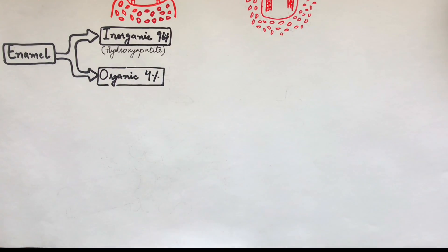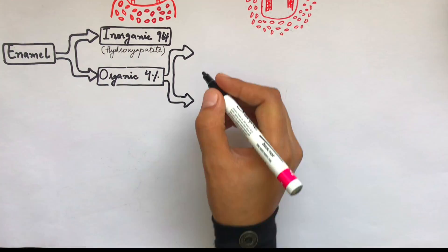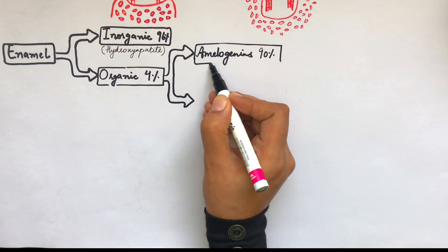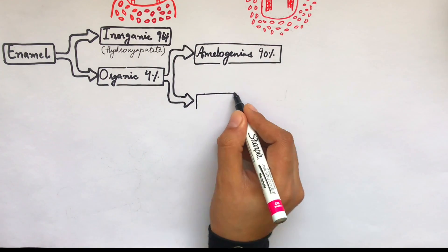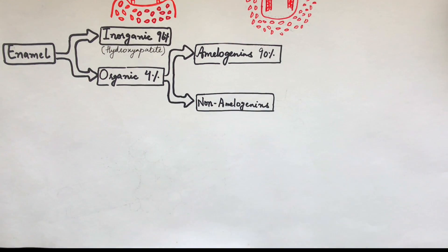Hydroxyapatite crystals make up its inorganic part while proteins make up its organic part. The proteins which make up the organic part of enamel are of two main groups called the amelogenins, accounting for 90% of its organic part, and the non-amelogenins which account for only 10% of its organic part.